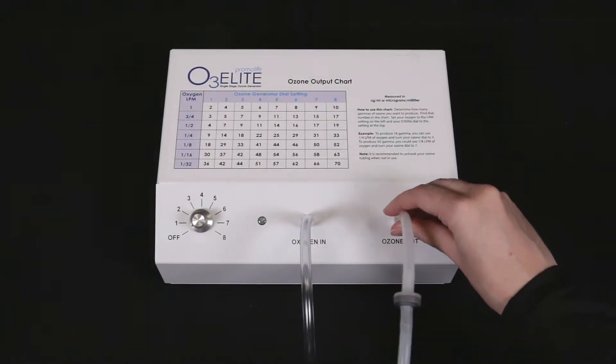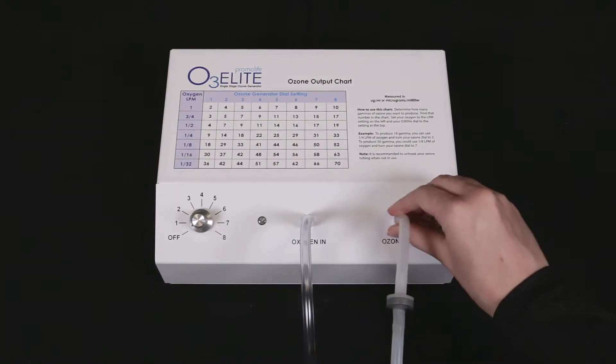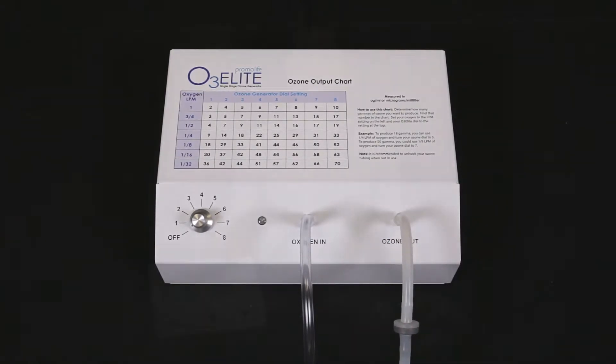To start, you will need to connect the tubing with the check valve and attach tubing to the ozone output of your ozone generator.